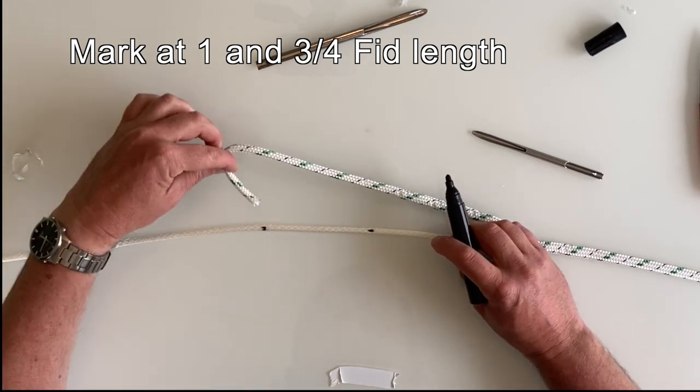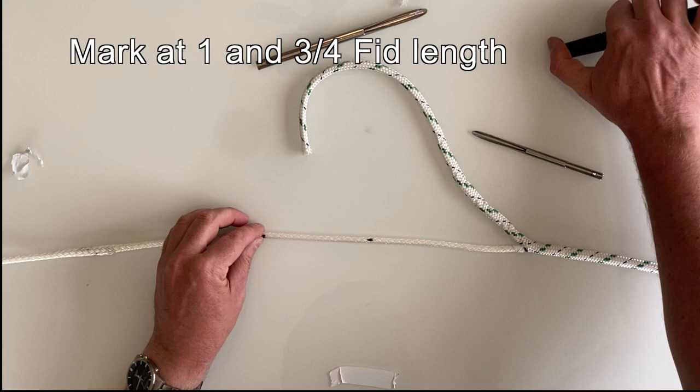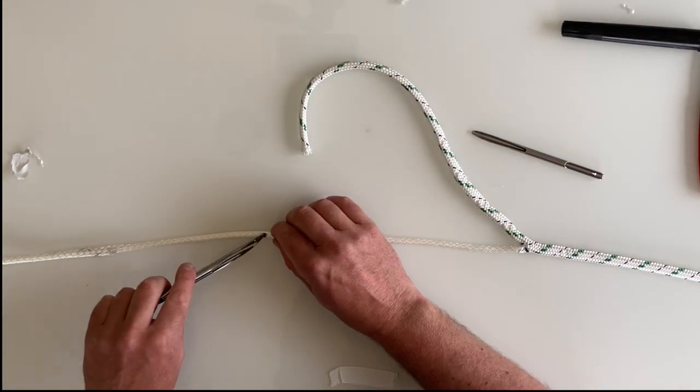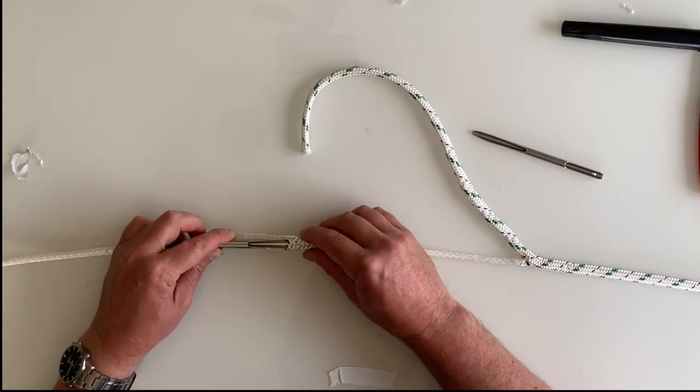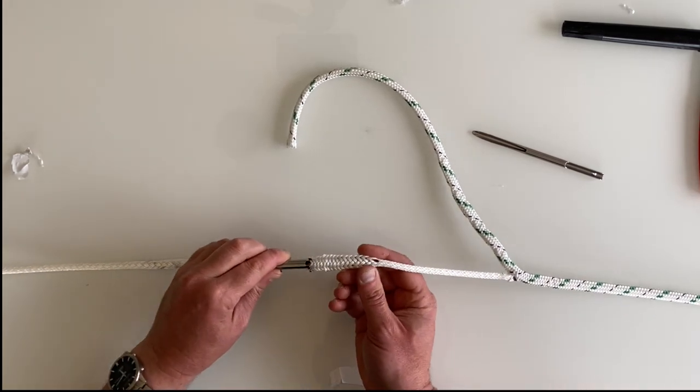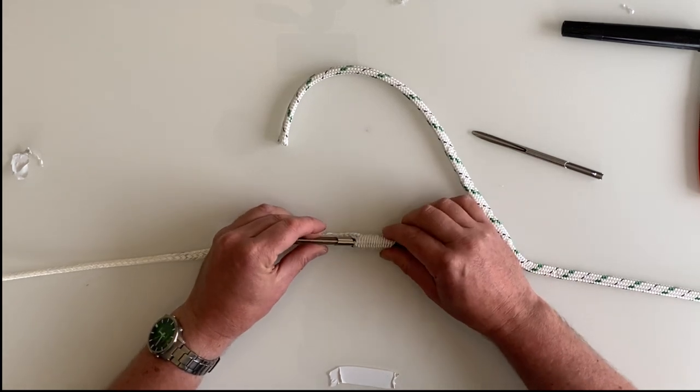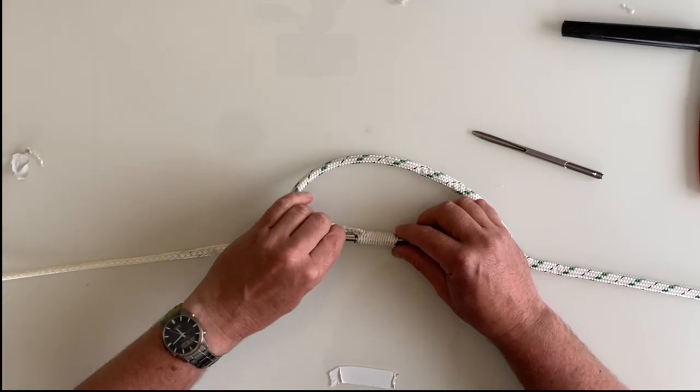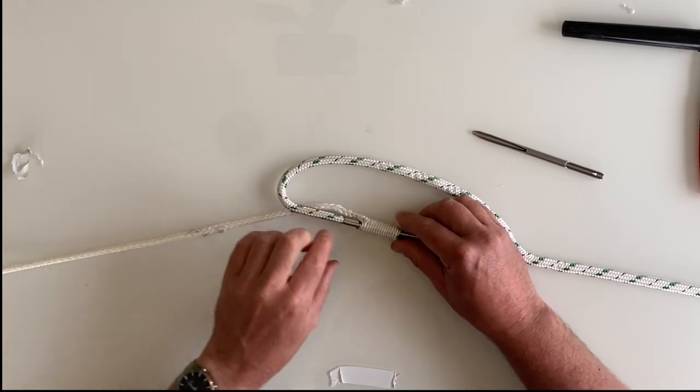Now I'm going to take the outer sheath and I'm going to splice that in the first mark and out the second mark. So I'll take that fid there and thread it through, and out the second mark. And take that sheath into the fid. There's a little hook at the back of the fid, and so I'll just bite that in. And that helps pull the rope through.